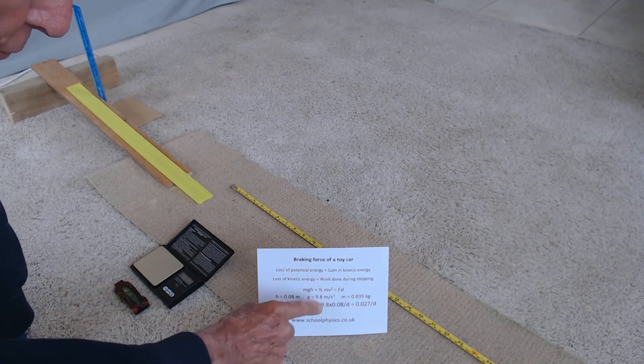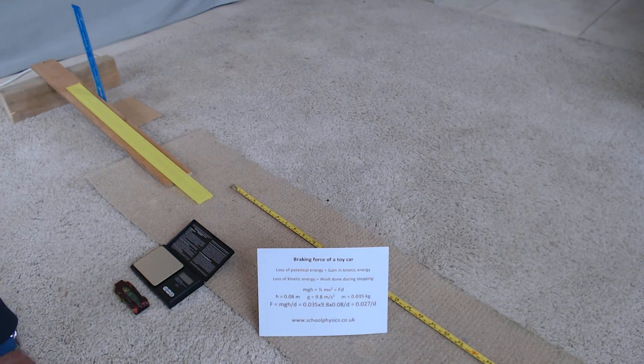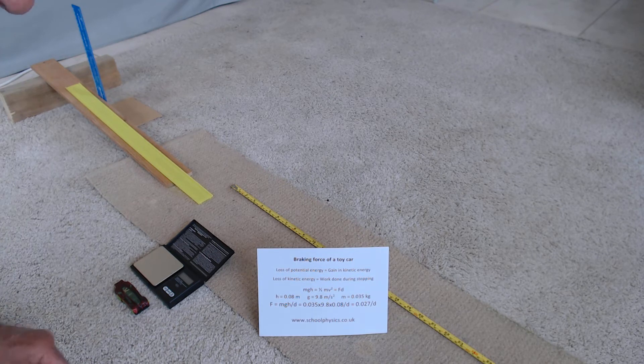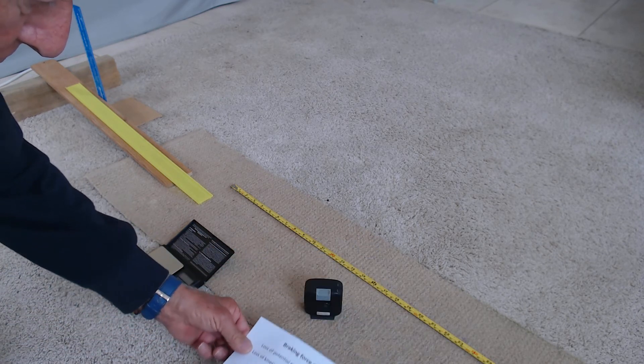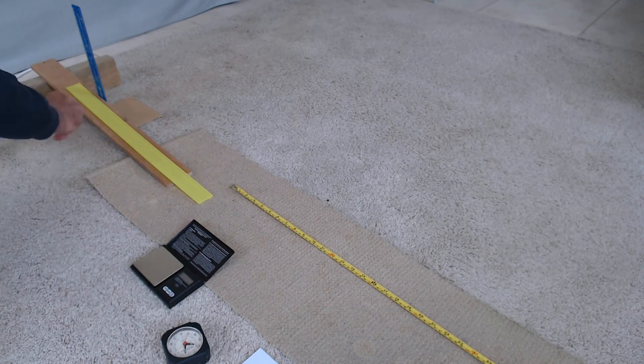And rearranging my formula fd, where d is the distance along the carpet of the stopping distance, we can calculate f, the braking force. So let's do that. And let's run it down from the mark.